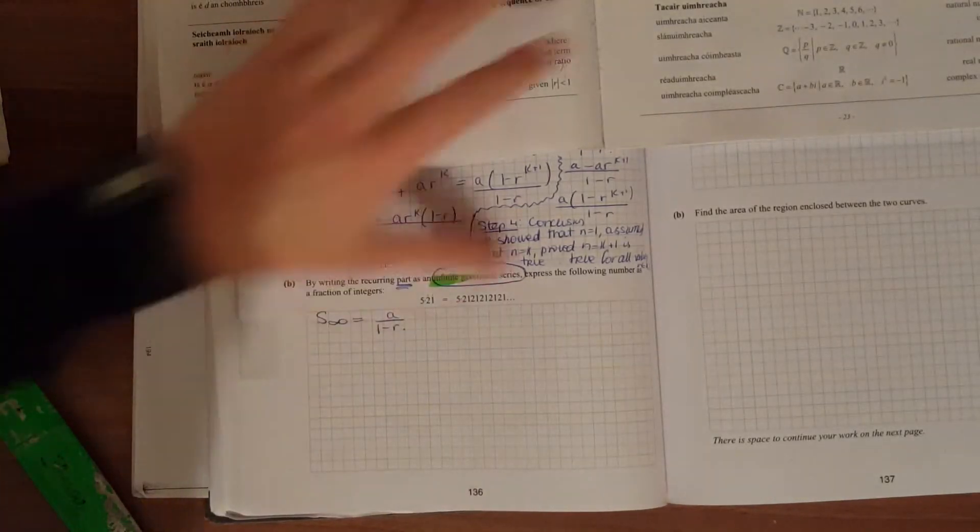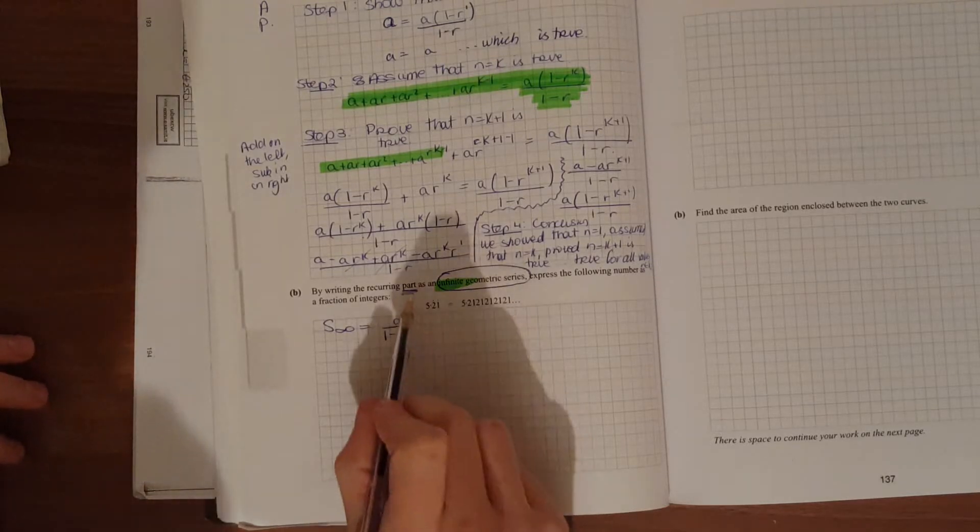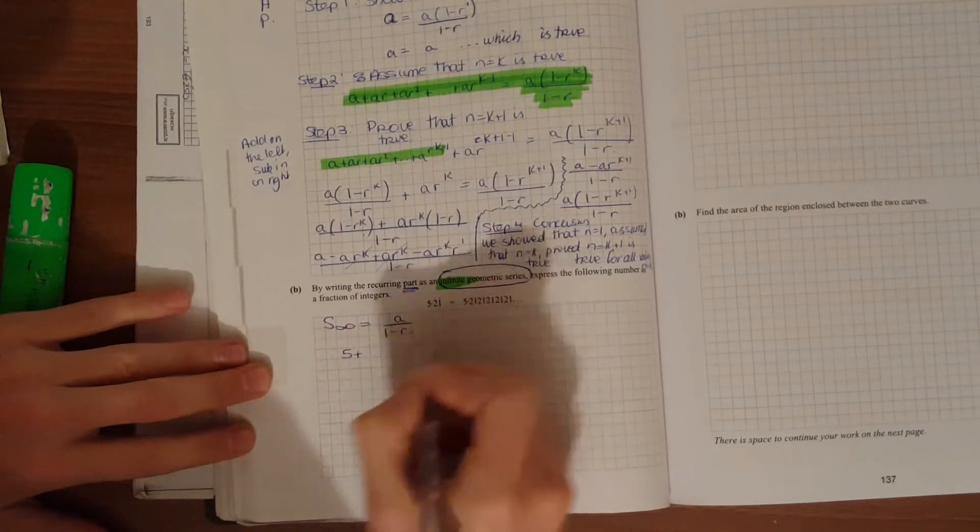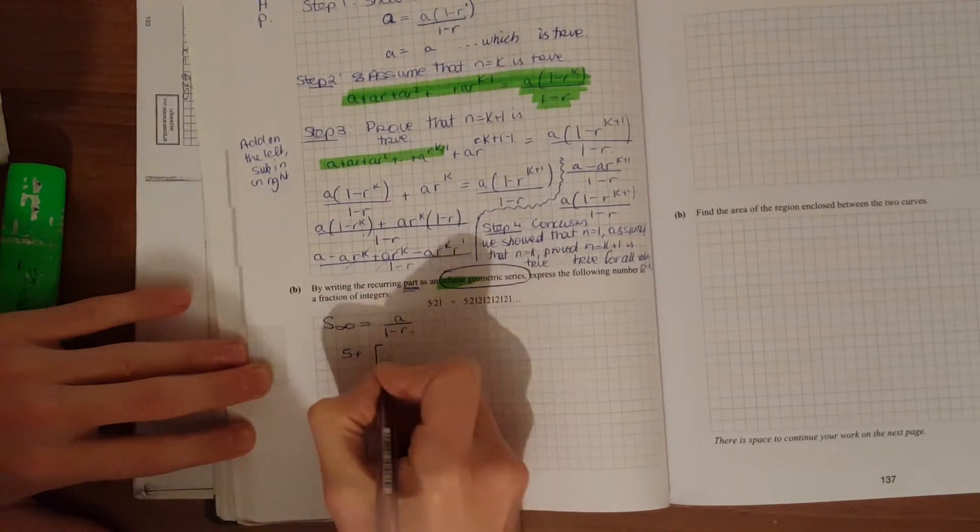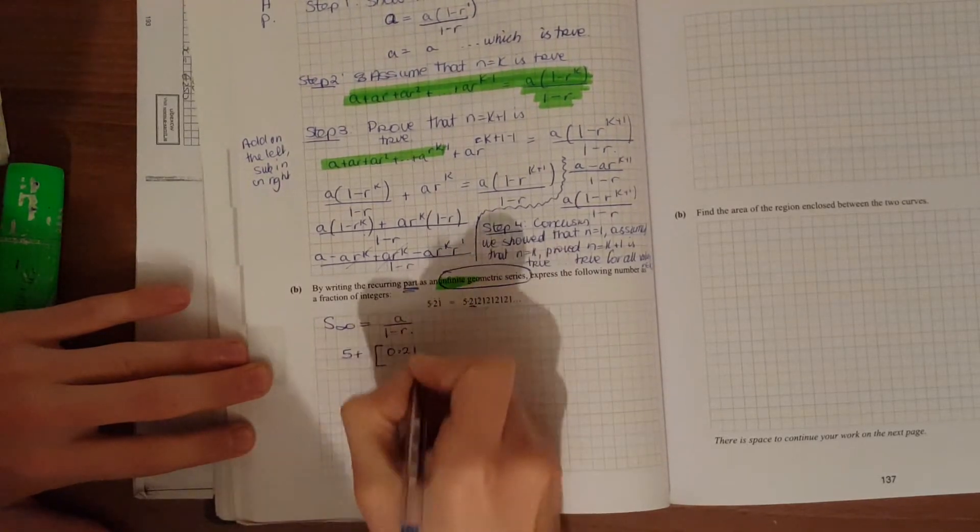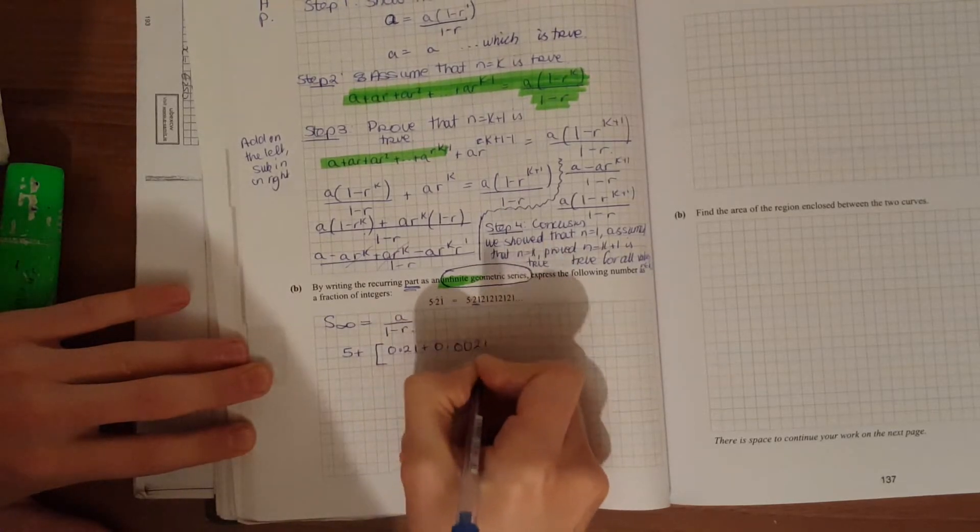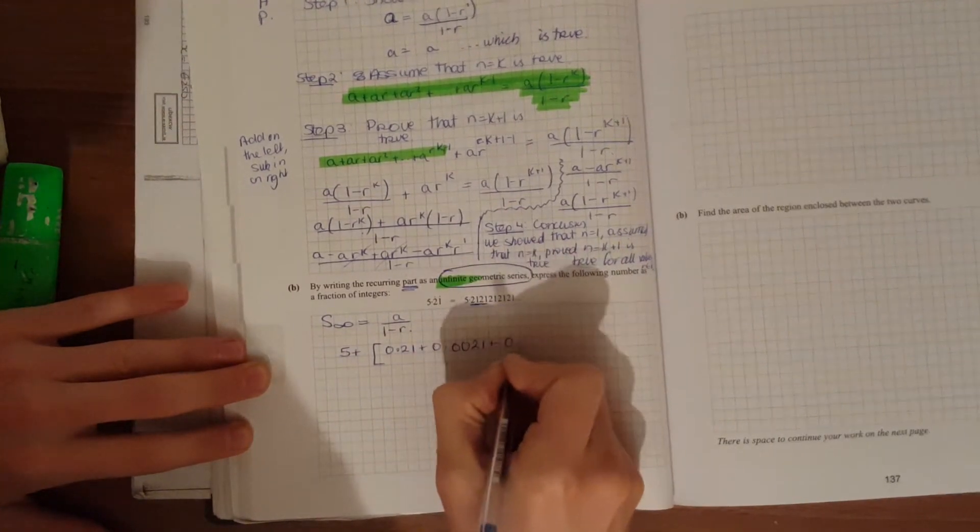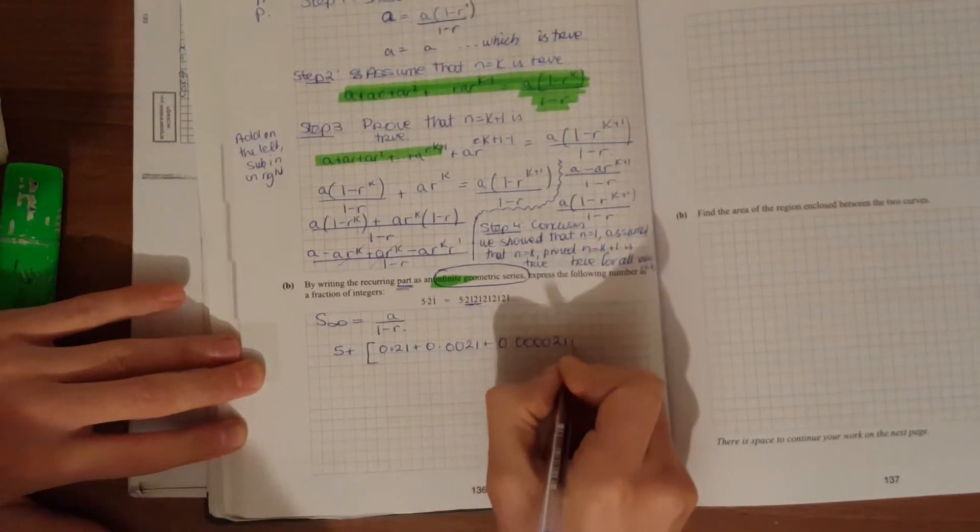What we must do now is get the first term and get the common ratio. Now it's only the recurring bit. So the 5 doesn't repeat. So we have 5 plus, I'll put it in big square brackets what repeats. So it's 2, 1, 2, 1, 2, 1. So 5 plus 0.21, that's the first two, plus 0.0021, plus 0.000021, and so on and so on.